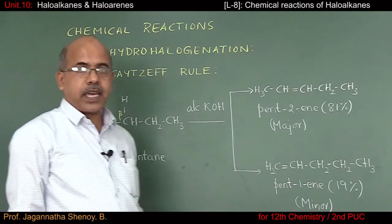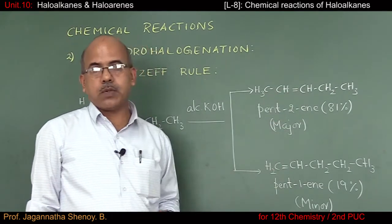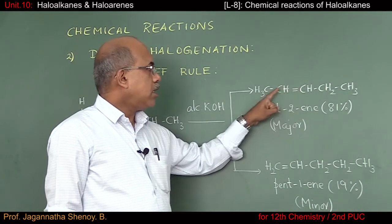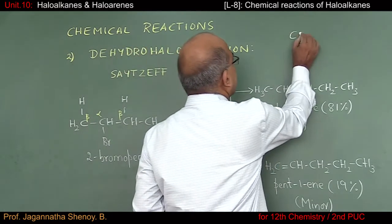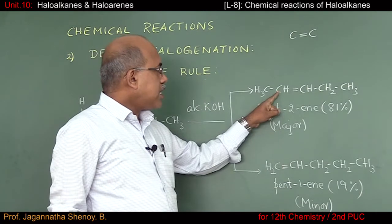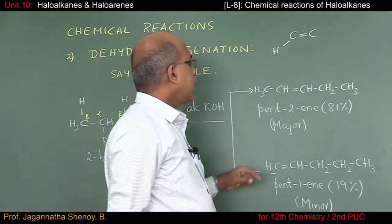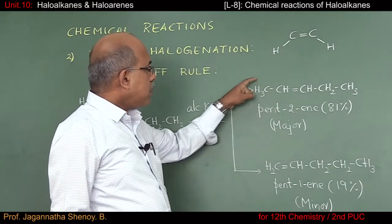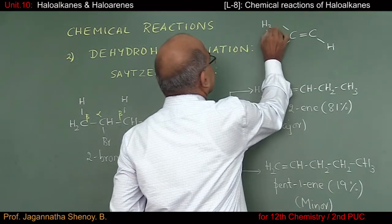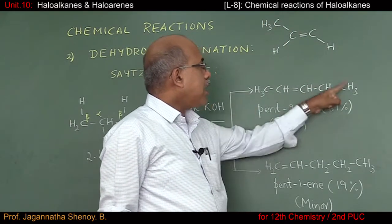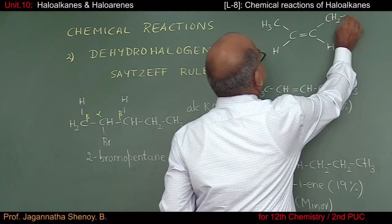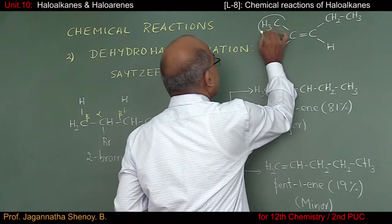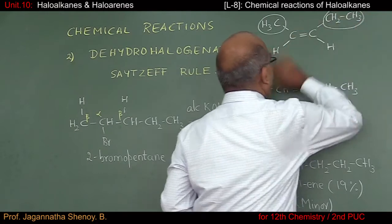In order to understand why pent-2-ene is the major product, let us compare the extent of substitution in these two molecules. I am going to consider the substitutions taking place on the doubly bonded carbon atoms. For pent-2-ene, on one doubly bonded carbon atom we have one hydrogen and a methyl group attached, and on the other carbon atom an ethyl group is attached.